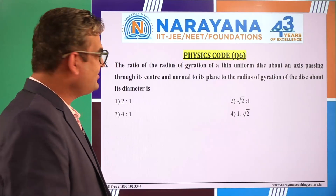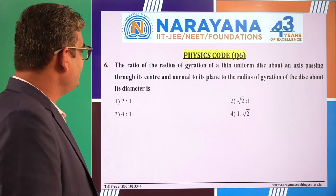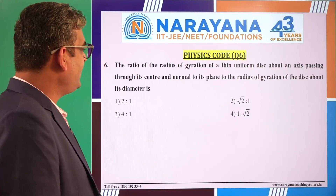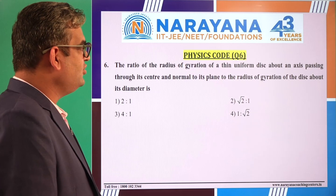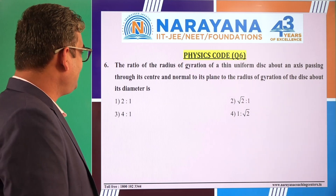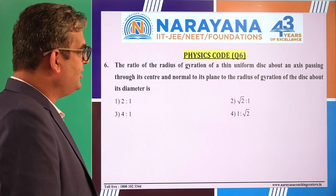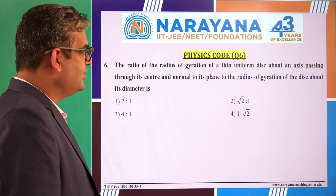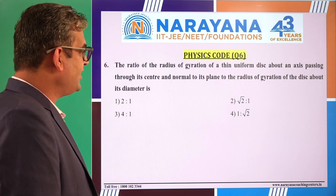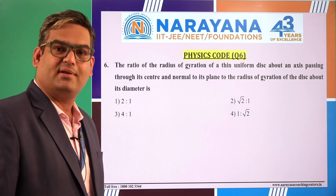Question number 6: The ratio of radius of gyration of a thin uniform disc about an axis passing through its center and normal to its plane, to the radius of gyration of the disc about its diameter is?